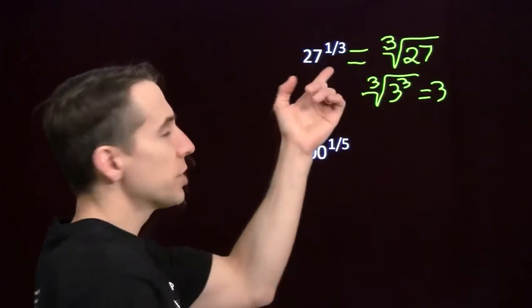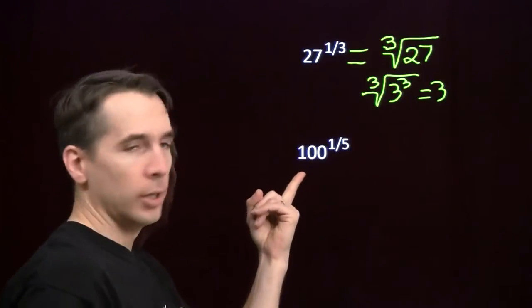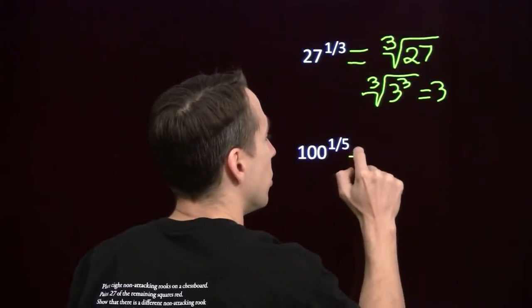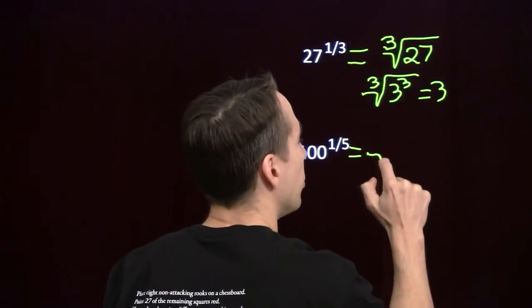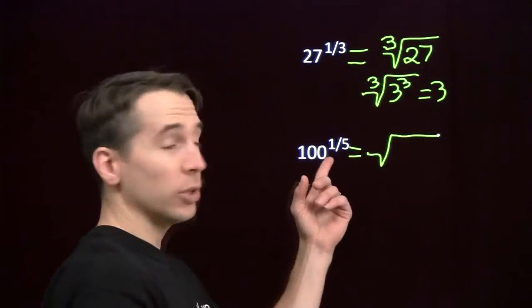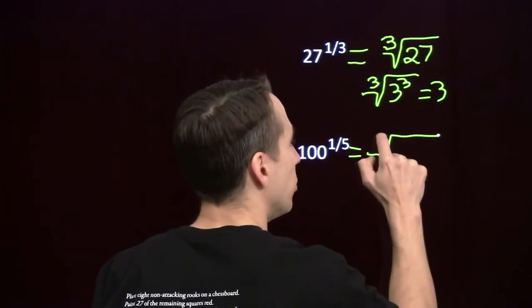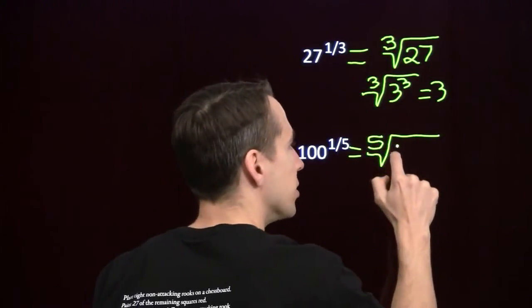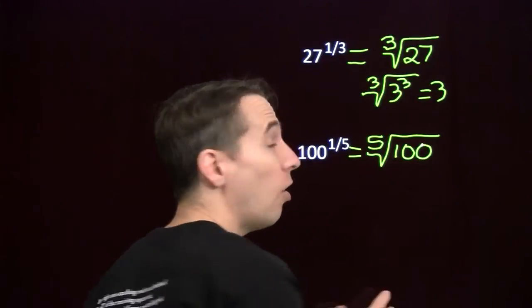So that takes care of cube roots, things raised to the 1 third power. Well, you know what we're going to do with this one down here. This is raised to the 1 fifth power. To use a radical to write that, we start with our radical. Because we're dealing with the 1 fifth power instead of a square root, we're going to put a 5 right there on the radical, and then we put the 100 inside. And that's all there is to it.